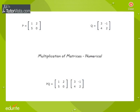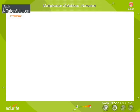Let us solve a numerical on multiplication of matrices. Problem: If P is equal to matrix 5, 2, 2, 1 and Q is equal to 1, 0, 0, 1, find PQ.